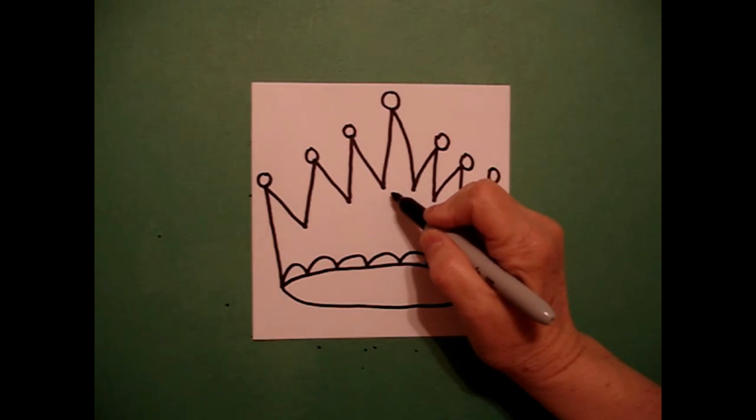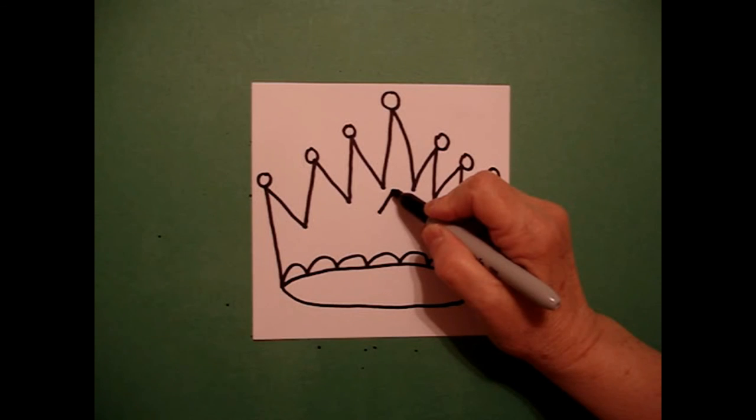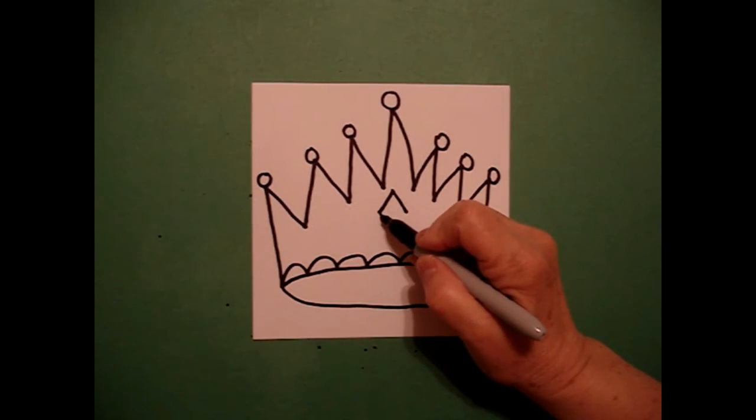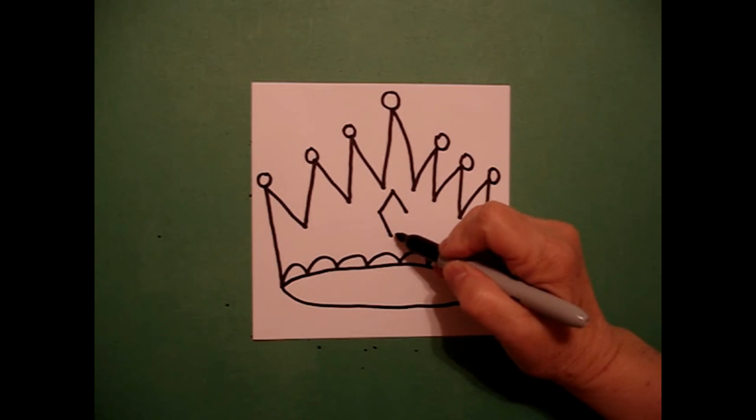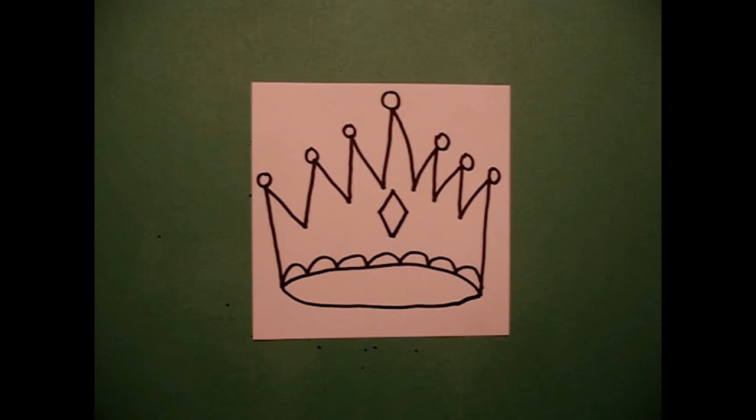In the center, I'm going to draw a diamond. Straight diagonal out on the left, straight diagonal out on the right, straight diagonal down on the left, straight diagonal line down, connect on the right.